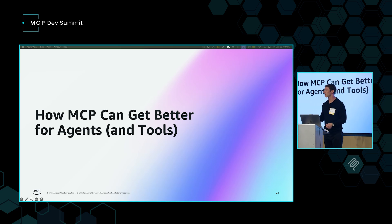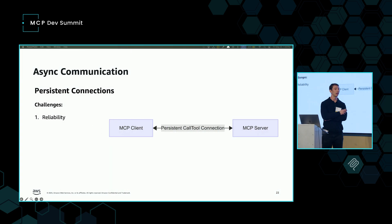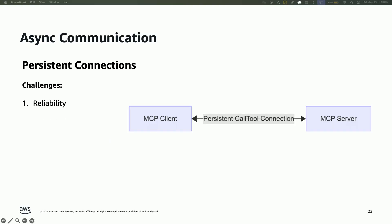Even though I think MCP is a really good place to build agents, it can still be better. The first area is async communication. Agents are increasingly async, and this is how async works today in MCP: you have a persistent connection and the server is streaming back progress notifications. This has a few challenges. First is reliability — what happens if the client breaks the connection? What happens if the server breaks the connection because of a deployment? Then you have to go through a sophisticated mechanism of populating buffered requests. Second is scalability — is my load balancer and API gateway going to hang out with all these connections for potentially weeks? And finally, operational complexity — if I want to do a deployment, I have a server with a connection and a job that's going to run for a week.